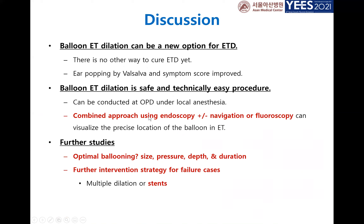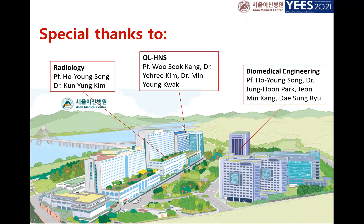In summary: balloon dilation can be a new option for eustachian tube dysfunction. This dilation is very safe and technically easy. However, the optimal size, pressure, and duration of ballooning are not yet determined, and there are still failure cases — so we need further intervention strategies. I'd like to thank all my collaborators, and thank you for your attention.